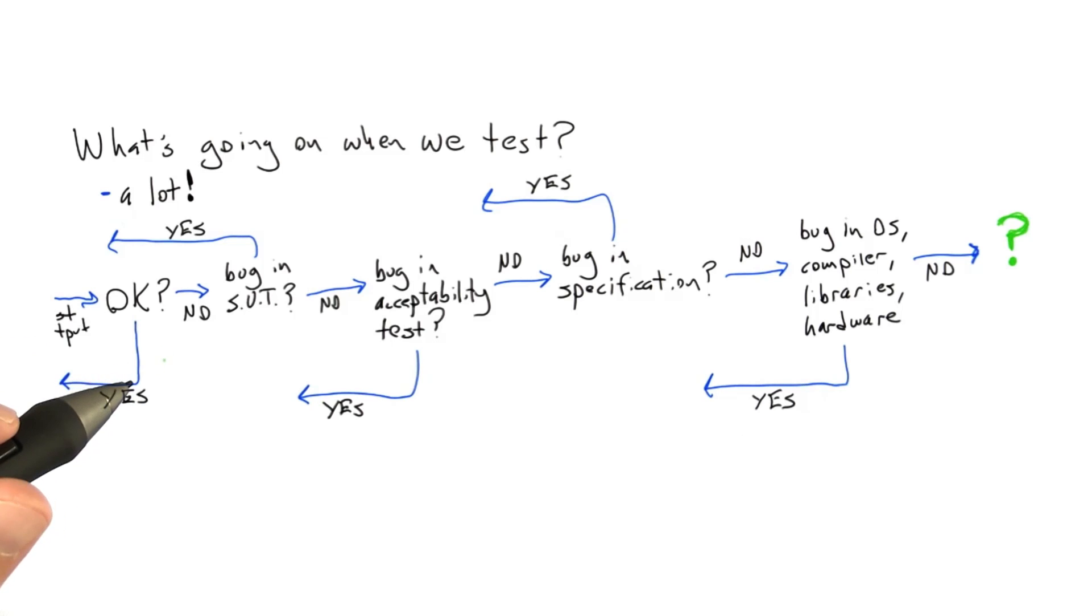These kind of discoveries that we're making about the system that we're using are not necessarily a problem because these are things that we need to know if we're going to create correct software in the future.